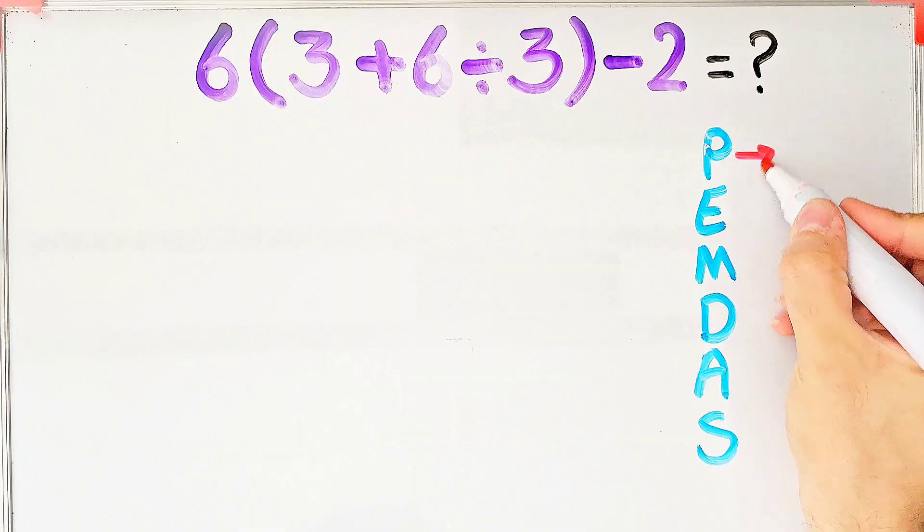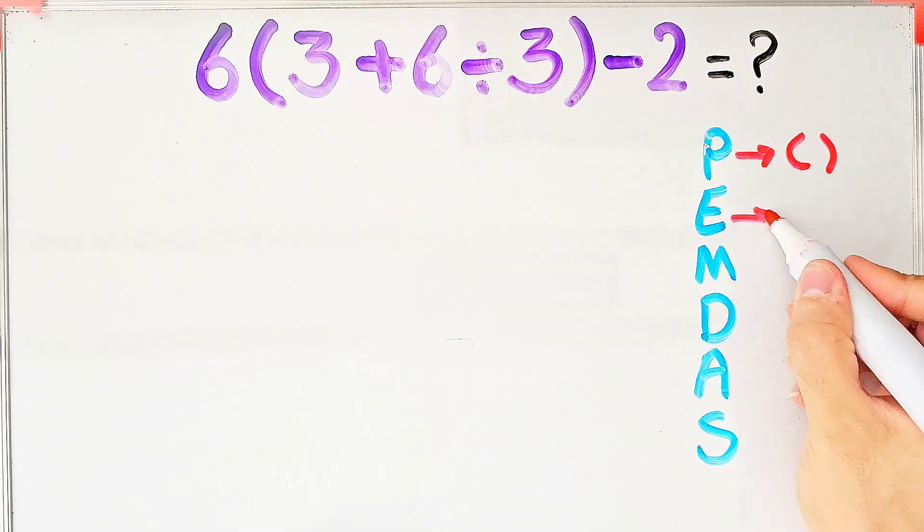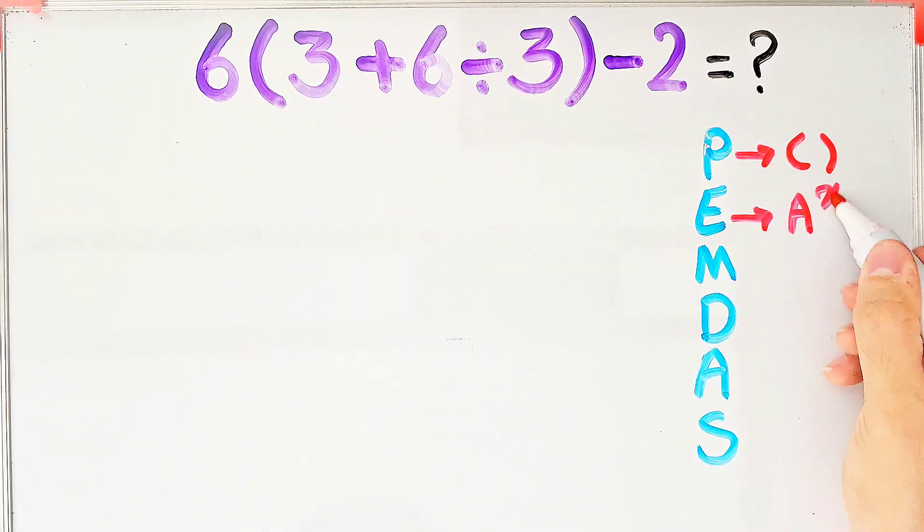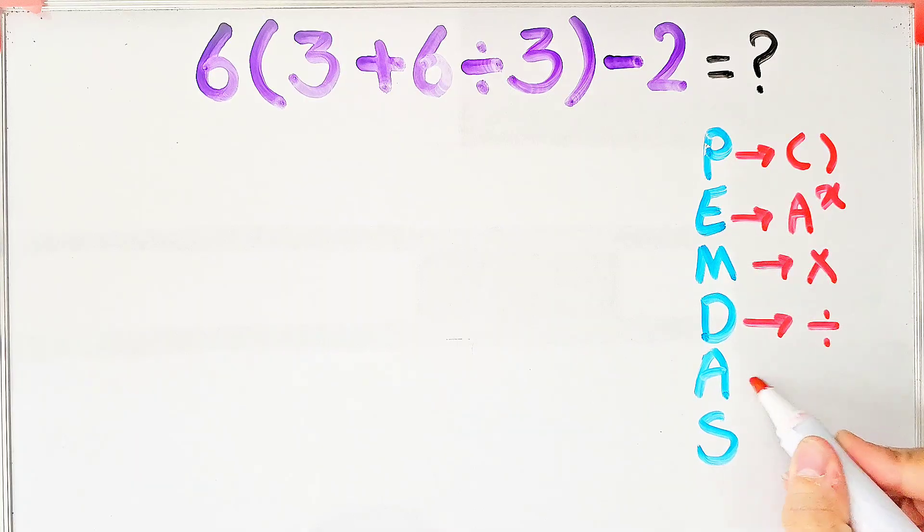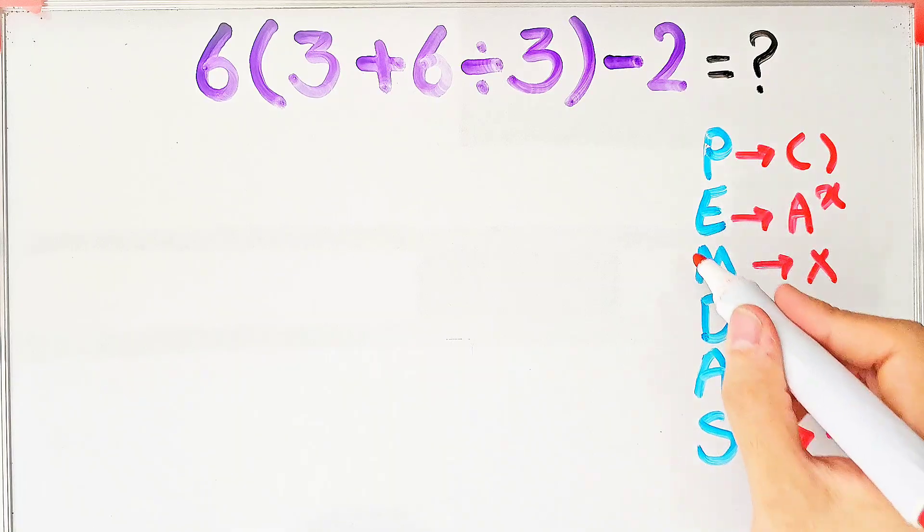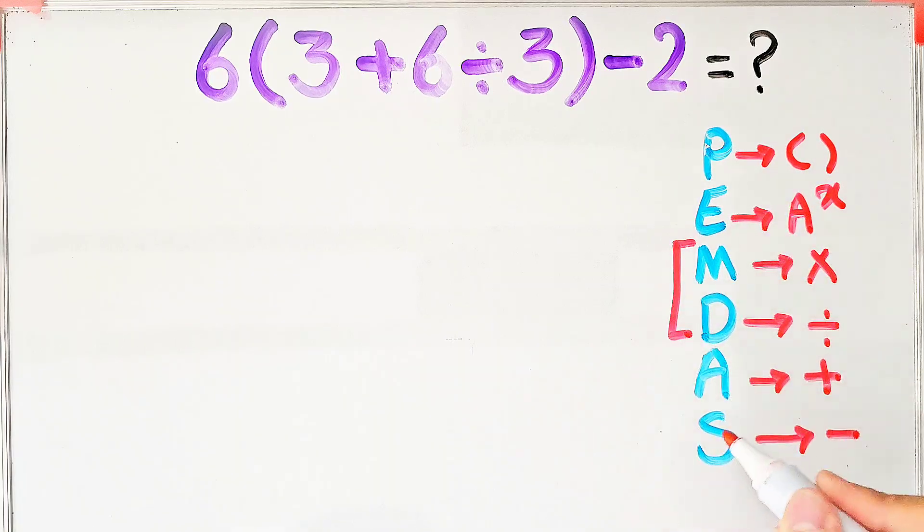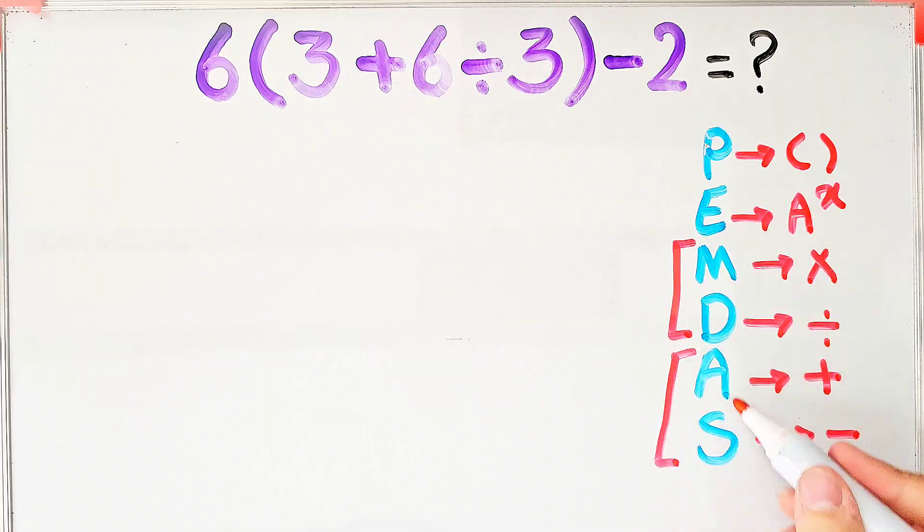In this rule, P stands for parenthesis, E stands for exponent, M stands for multiplication, D stands for division, A stands for addition, S stands for subtraction. Multiplication and division have the same level of priority. Also addition and subtraction have the same priority. When we have both in an expression, we start from the left and simplify the question.